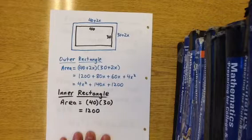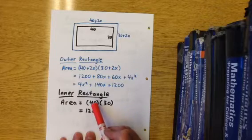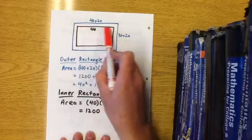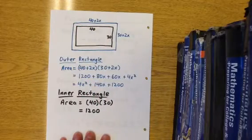Let's see what the area of the inner rectangle is. The inner rectangle is simply 40 times 30, which is 1200.